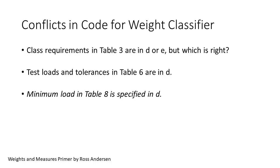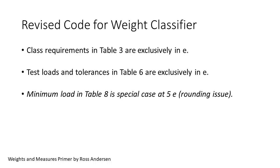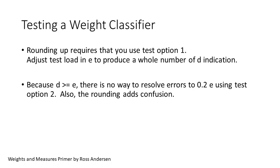In Table 8, the minimum load is specified in D, but does this make sense as D can be equal to E or even 100E? The proposed revisions resolve all of the questions and conflicts. Class requirements as well as test loads and tolerances are correctly specified in terms of actual weight in E. The minimum load of 5E borrowed from R76 is a special exemption. It reflects the roundup feature of these instruments and the fact that the resolution of the instrument is disconnected from the accuracy. The test of a weight classifier is complicated by the roundup operation. To properly test these instruments, you must use test option 1 with error weights and adjust the test load to produce a whole number of Ds of indication. Because of the larger values of D in the roundup, we can't use option 2 since you typically can't resolve errors to E, let alone to 0.2E.